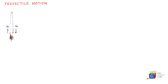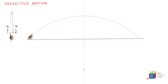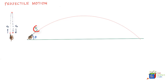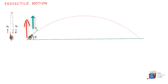Now let us say the same cannon projects the ball but at an angle theta with the ground. We assume there is no air and no wind, so the motion of the ball is not affected by either. In the first case of perfect vertical motion the ball went straight up and came down with no horizontal displacement. Now, velocity v₀ at angle theta imparts both a horizontal and a vertical component to the ball.